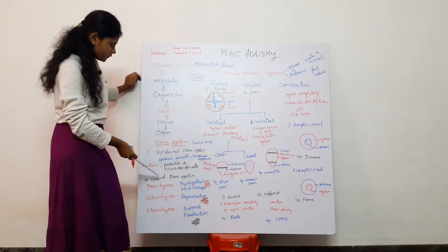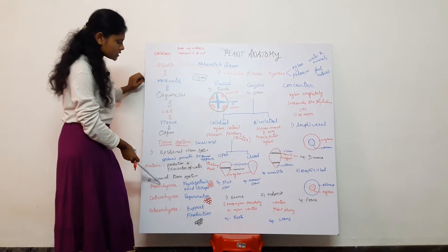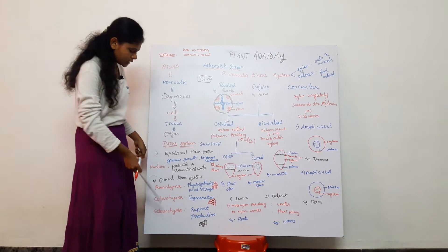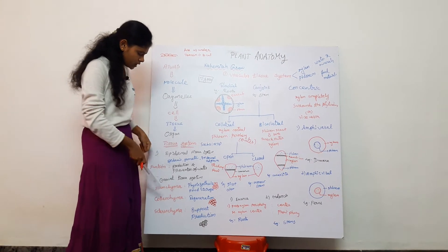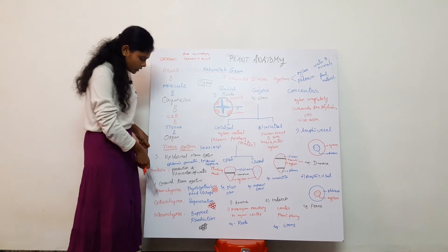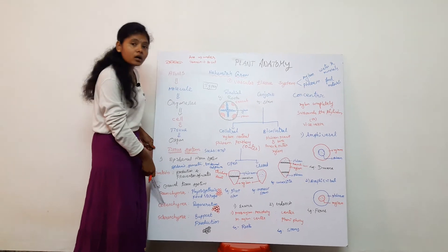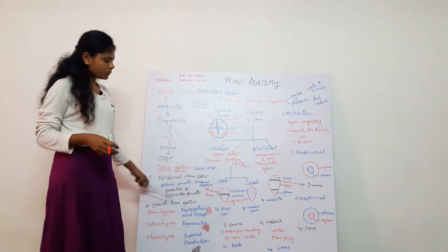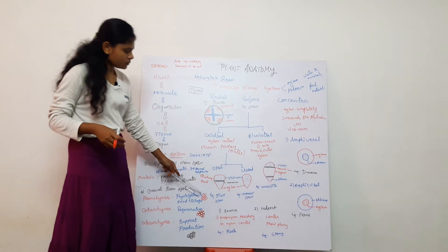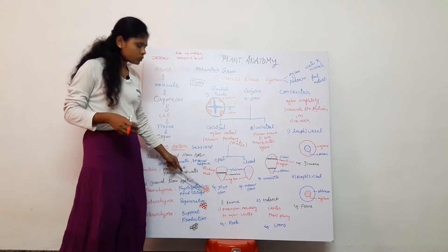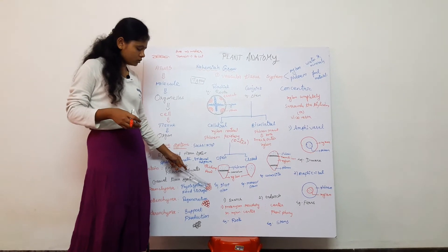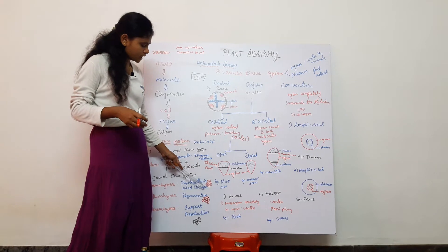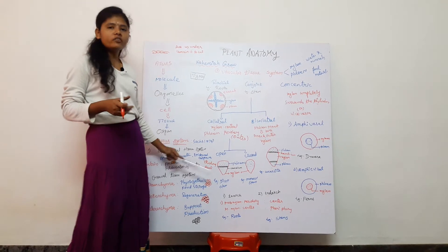The ground tissue system is classified into three types: parenchyma, collenchyma, and sclerenchyma. Parenchyma has a round-shaped structure and is present with intercellular spaces. What is its function?